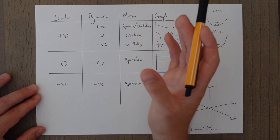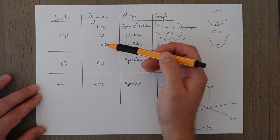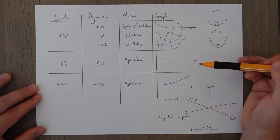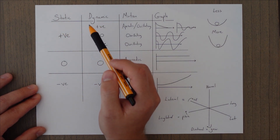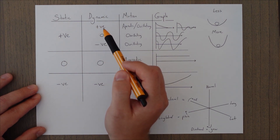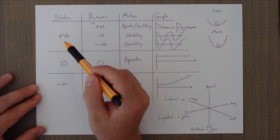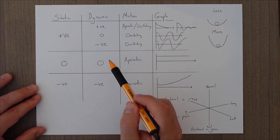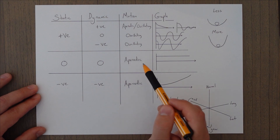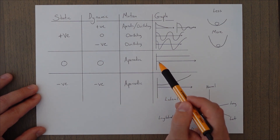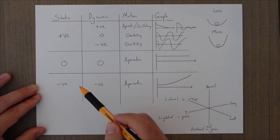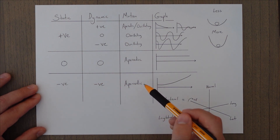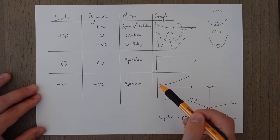Positive static stability with negative dynamic produces oscillating motion where each oscillation moves further from the equilibrium point. Important to note: if an object is positively dynamically stable, it must also be positive in static stability, but not necessarily vice versa. Neutral static with neutral dynamic is aperiodic — you displace something and it stays displaced without getting closer or further over time. Negative static with negative dynamic is also aperiodic — an initial divergence that just keeps diverging over time.